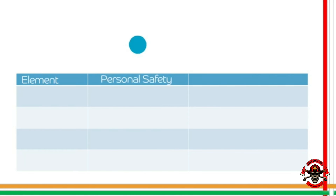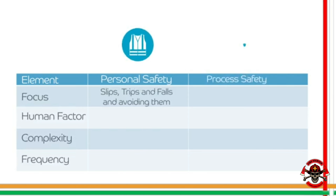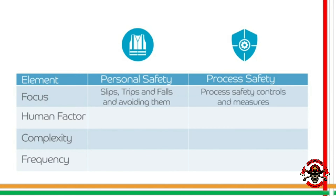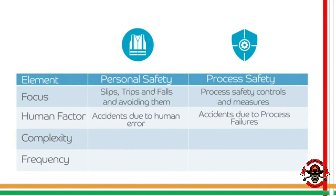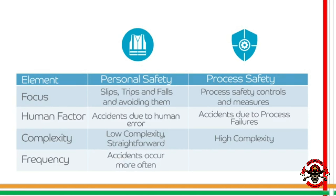In a quick comparison: personal safety focuses on common accidents like slips, trips, and falls, while process safety focuses on process safety controls and measures. In personal safety, most accidents are due to human error; in process safety, accidents involve less human error and more process failures. Personal safety is straightforward, focusing on hazard identification and protection, while process safety is more complex, as you know from operating your plants and processes.